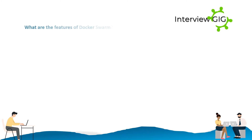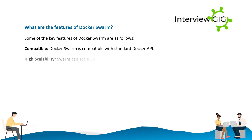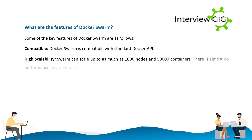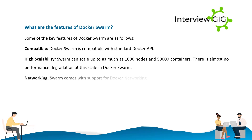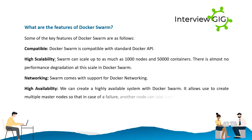What are the features of Docker Swarm? Key features include: Compatible — Docker Swarm is compatible with the standard Docker API. High scalability — Swarm can scale up to as much as 1,000 nodes and 50,000 containers, with almost no performance degradation at this scale. Networking — Swarm comes with support for Docker networking. High availability — we can create a highly available system with Docker Swarm. It allows use of multiple master nodes so that in case of a failure, another node can take over.